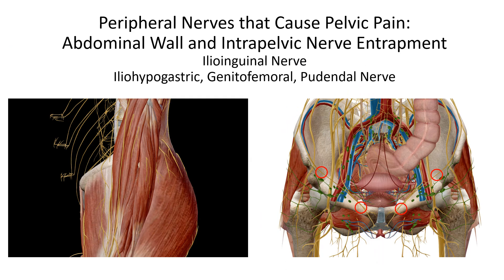There are a number of nerves within the abdominal wall and also nerves that pass through the pelvis that can be trapped after a surgical incision or secondary to body mechanics — for example, sitting too much. Here is the course of the ilioinguinal nerve, which can be injured during an incision for inguinal hernia repair, C-section, or laparoscopic surgery.